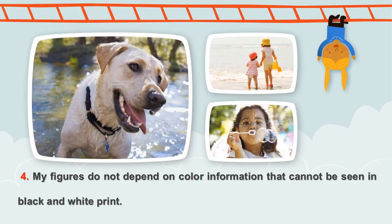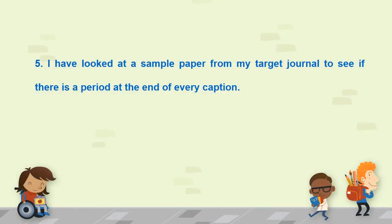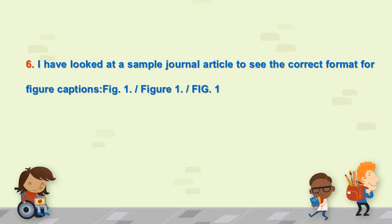Now we follow the checklist for the format of figures and tables. One: My tables have titles on the top, but my figures have captions on the bottom. Two: No articles — the, a — at the beginning of figure captions. Three: I have printed out and looked at my figures and tables on paper to make sure that the text is not too small.